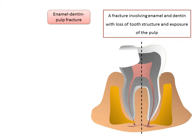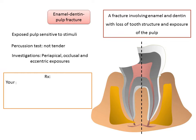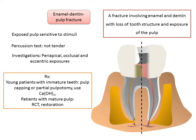Enamel-dentine-pulp fracture: the exposed pulp is sensitive to stimuli; the tooth is non-tender to percussion and exhibits normal mobility. Periapical, occlusal, and eccentric radiographic exposures are recommended. In young patients with immature or completely formed teeth, preserving pulp vitality by pulp capping or partial pulpotomy is advantageous. In patients with mature apical development, root canal treatment is the treatment of choice and should be followed by crown placement.